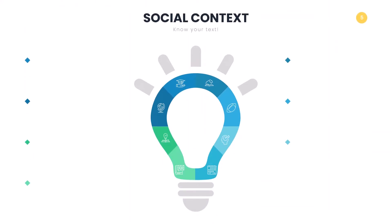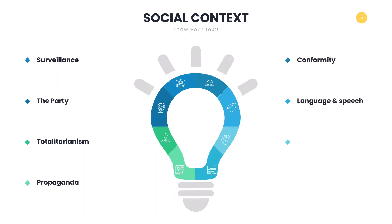In 1984, Winston's social context is defined by a 24/7 surveillance society, the totalitarian government of the party, how language and speech are regulated, that everyone dresses the same, the existence of a thought police, and the pervasive presence of propaganda. It is only by knowing the social context that we can begin to consider how the world of the text shapes and affects your characters in different ways. Remember, context is external and is easily identifiable on the surface of the text.